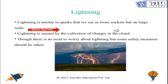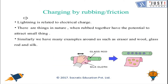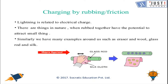Lightning is caused by the collection of charges in the clouds. Charges are gained when you rub two things together. As you can see in this picture, when you rub a glass rod with a silk cloth, the glass rod gains a positive charge and the silk cloth gains a negative charge. You can try this at home by rubbing a plastic ruler with your hair — your hair and the ruler will get charged and attract small pieces of paper.